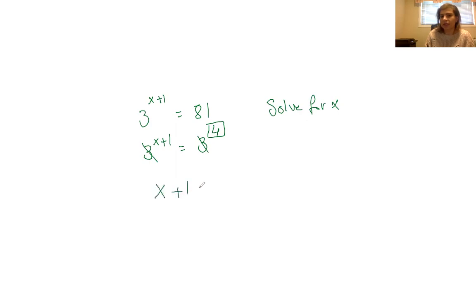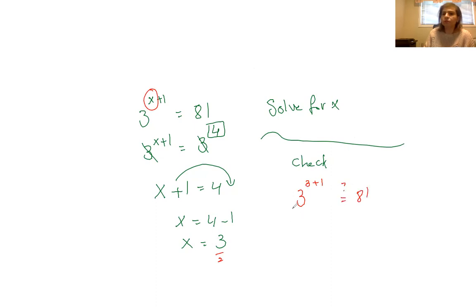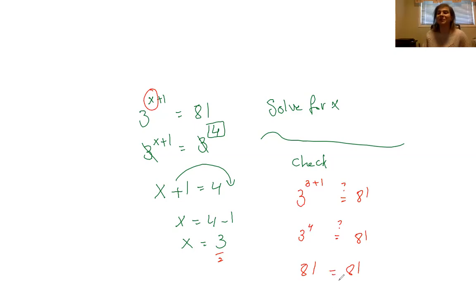So x plus 1 equals 4. Bringing the 1 over, x equals 4 minus 1, so x equals 3. Let's check: plugging in x equals 3, I get 3 to the power of 3 plus 1 equals 81. That's 3 to the power of 4 equals 81. Entering this in the calculator, 3 to the power of 4 gives me 81 equal to 81. The left side equals the right side, so the solution x equals 3 is correct.